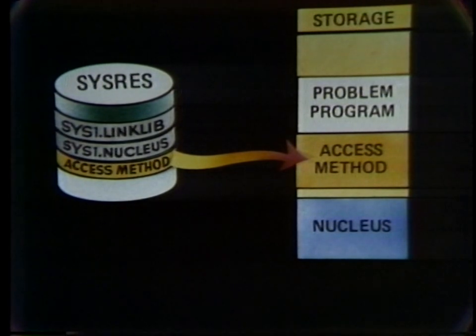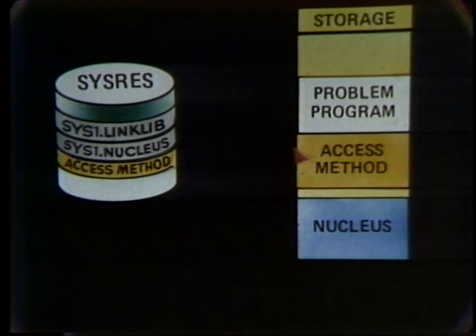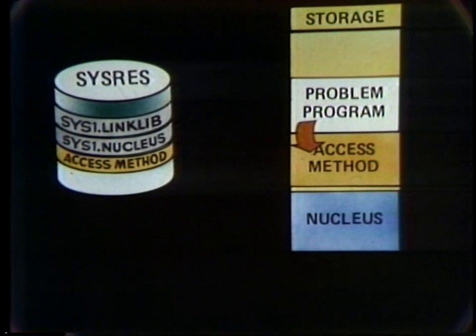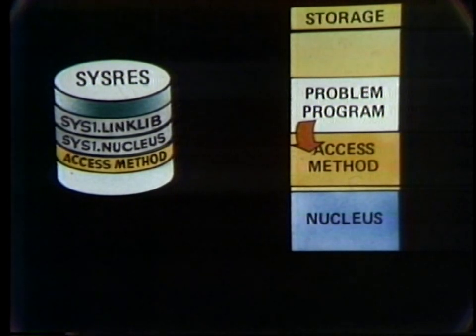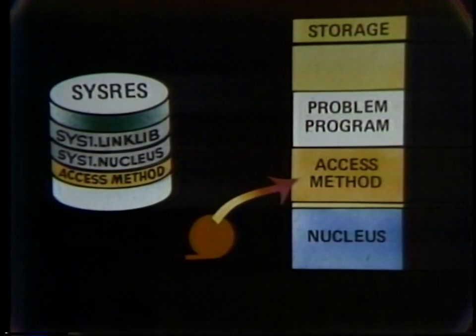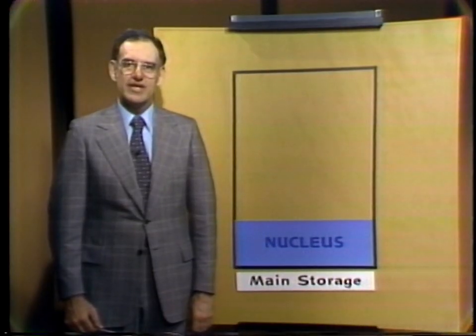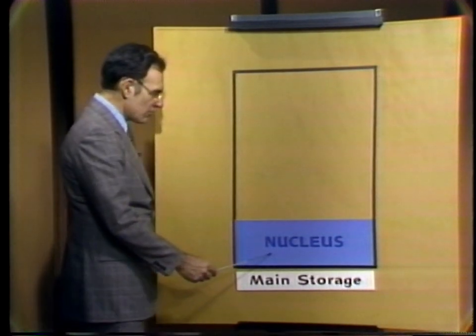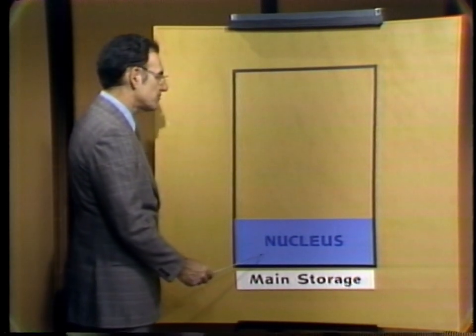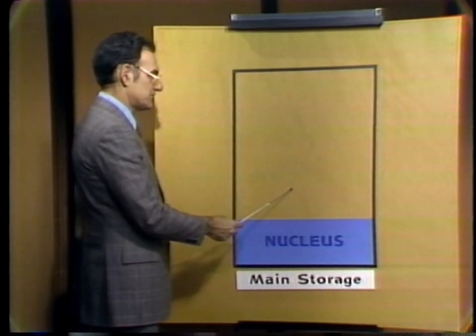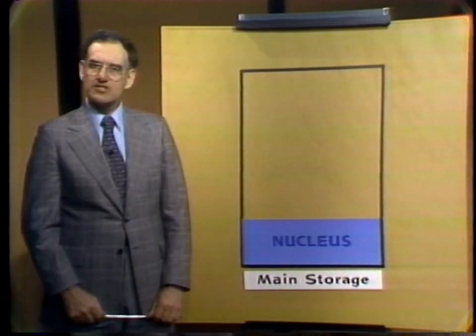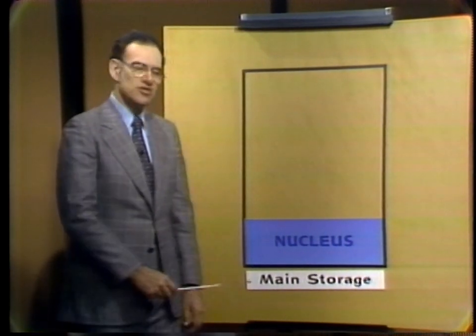At the point where a record is needed, the problem program issues the get macro or some other equivalent. The get results in a branch to the access method. If the desired record is already in storage, the access method gives the record or its location to the problem program. If not, the access method first reads the record into storage and then gives it to the problem program. We have said that the nucleus occupies the lower end of main storage and that problem programs execute out of the remaining area. The various configurations of OS differ mainly in the way they manage the use of this area.